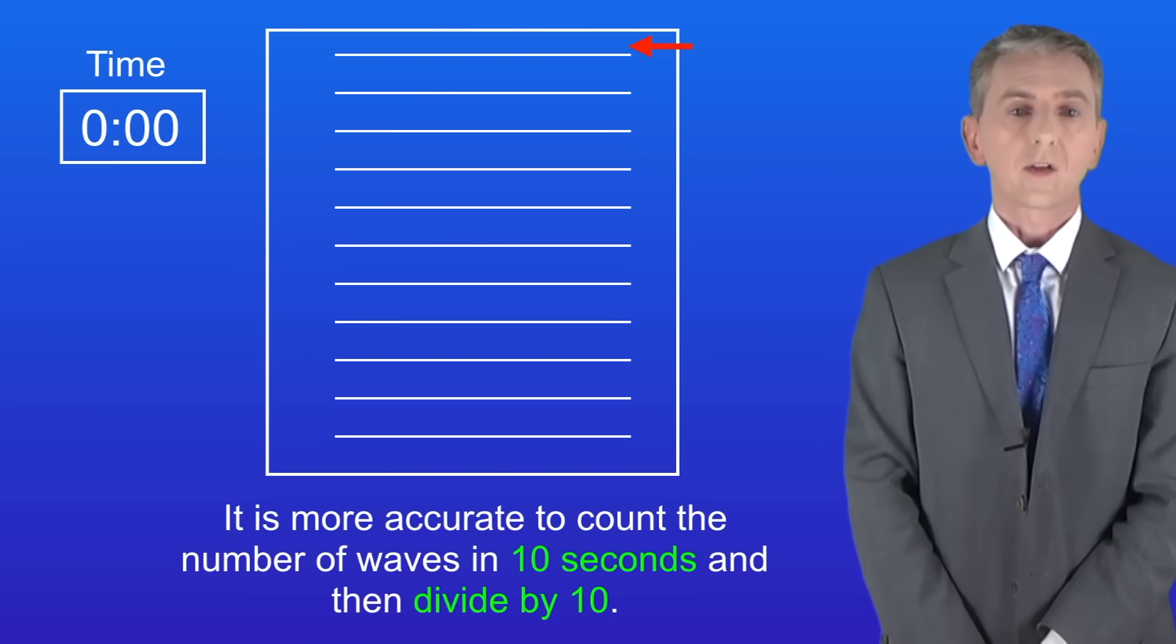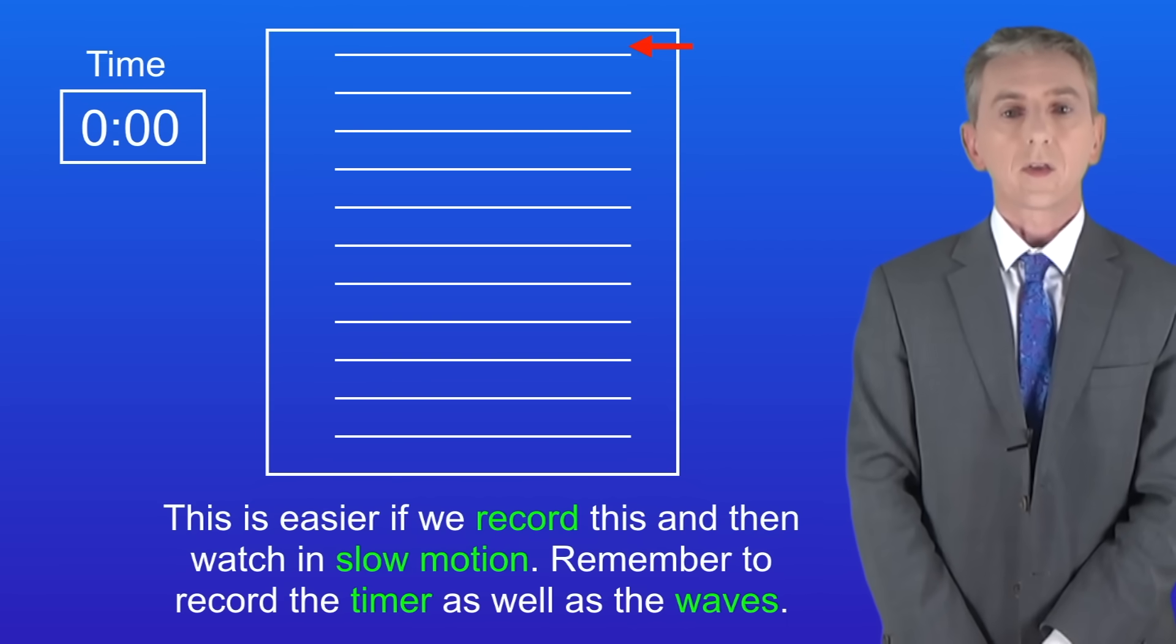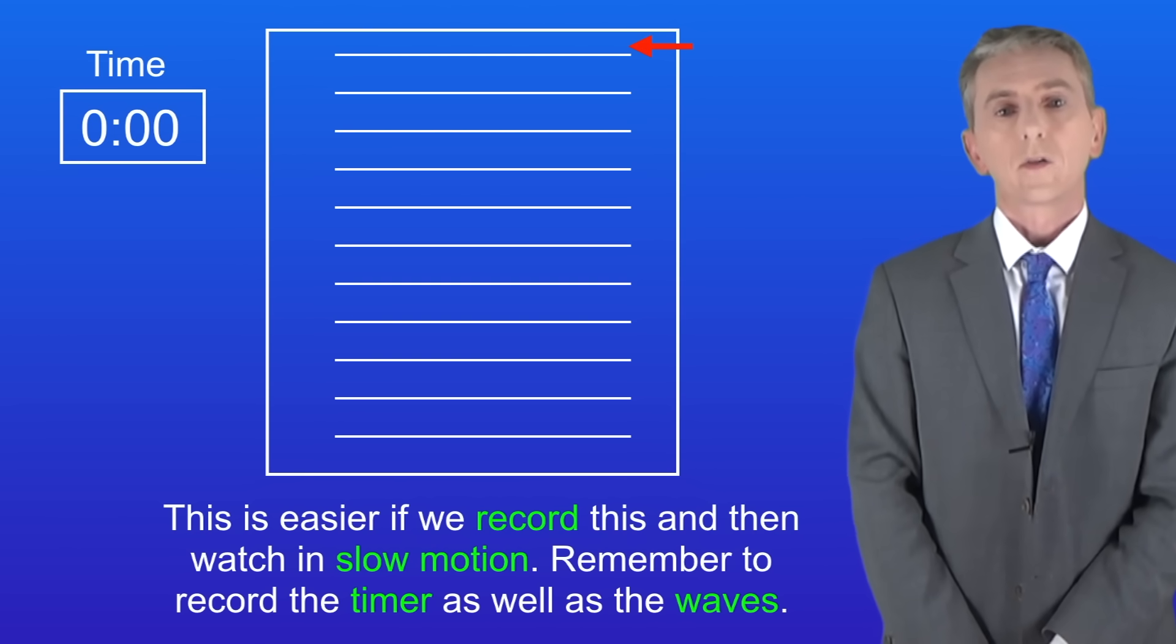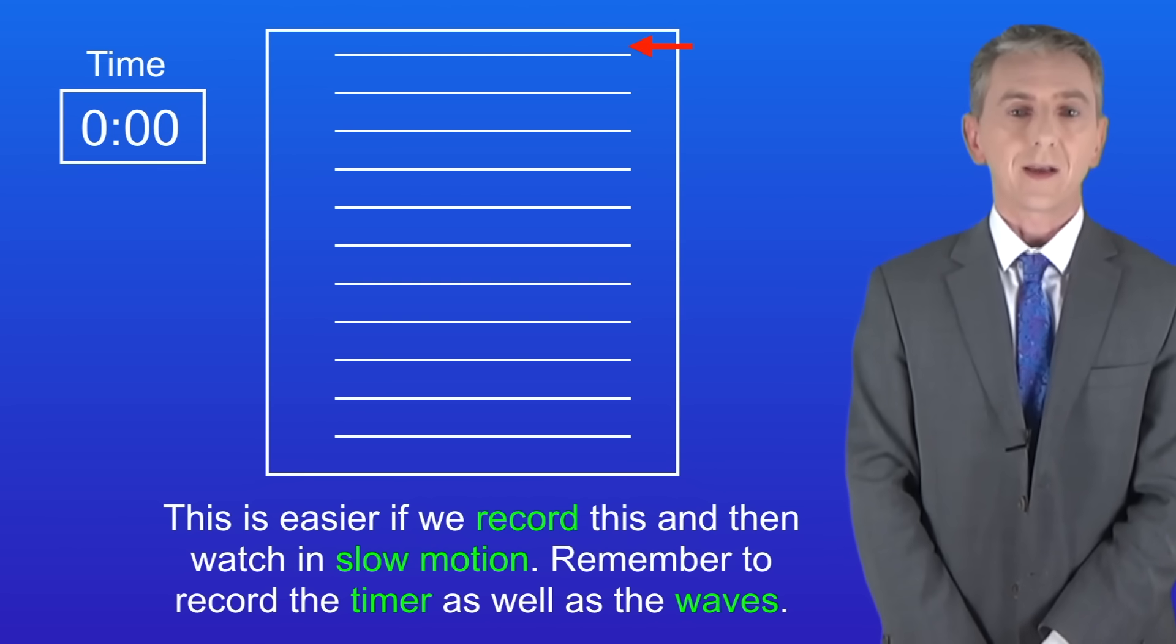It's more accurate to count the number of waves in 10 seconds and then divide by 10. Again this is easier if we record this and then watch it in slow motion. But remember we need to record the timer as well as the waves. I'm going to count the number of waves that pass the arrow in 10 seconds starting now.